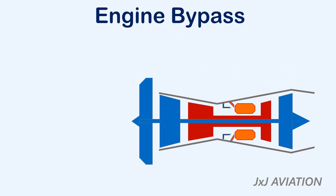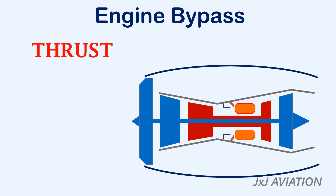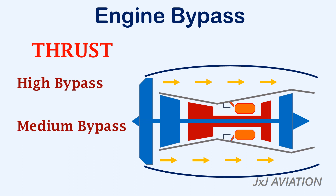The engine bypass section also increases the overall thrust produced by the engine. Most of the air entering the engine is pushed backwards by the fan through the bypass section. Depending on how much air enters the bypass section, the engine may be classified as high bypass, medium bypass, or low bypass turbofan, and used on different aircraft.